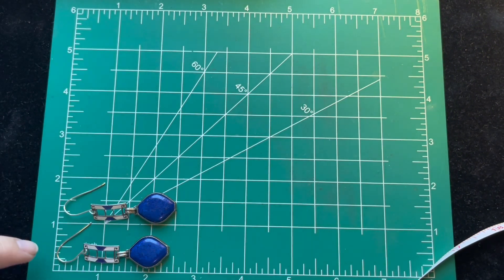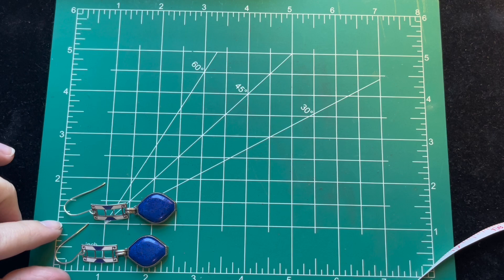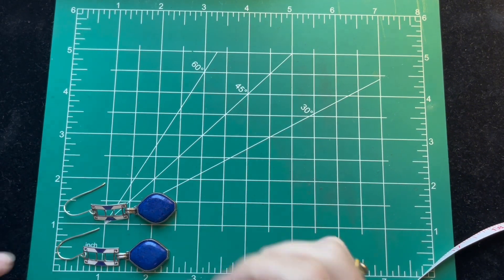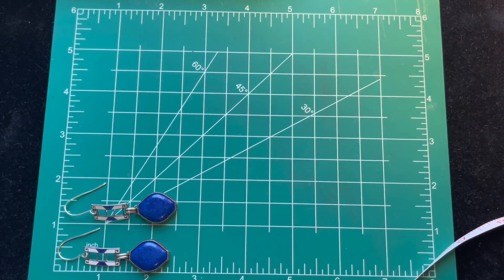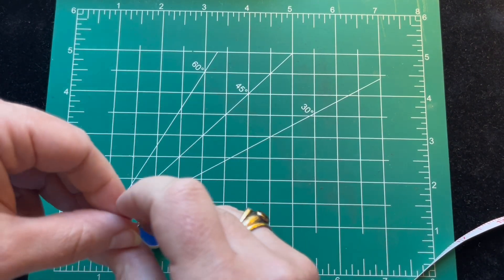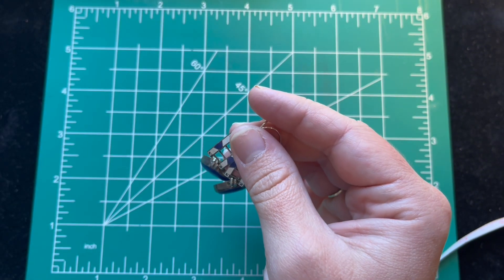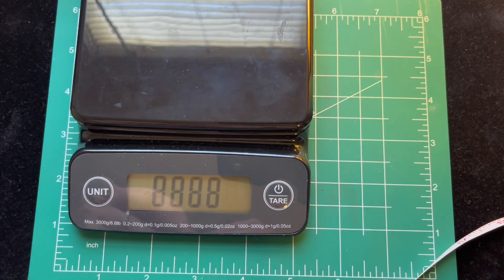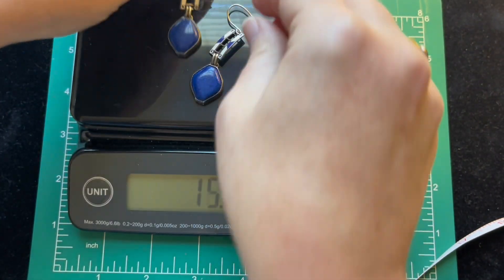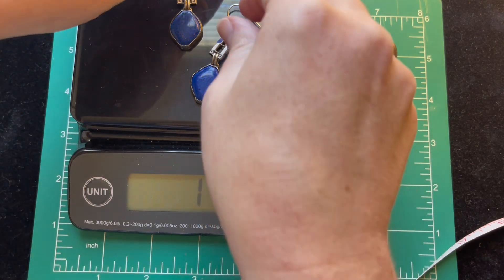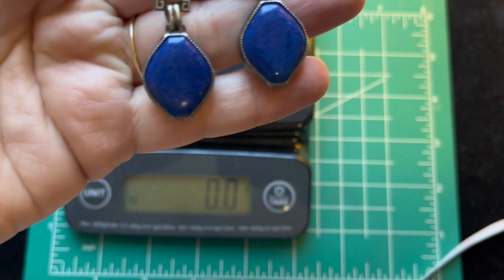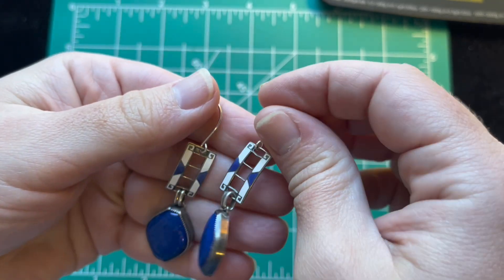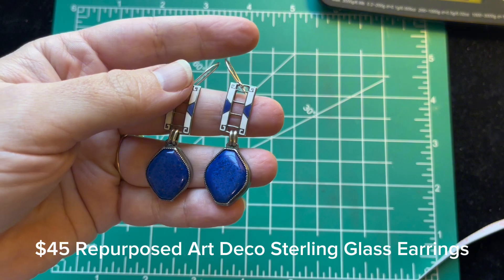These are almost two and a half over two and a quarter and then about a half an inch wide, a little more than a half an inch wide. These weigh eleven point seven grams. They are a little bit of weight. They are actually very comfortable. I wore these to see how they looked and how they felt. Very nice and comfortable. I'm going to ask forty-five dollars for these sterling art deco repurposed earrings.